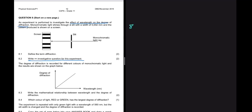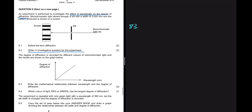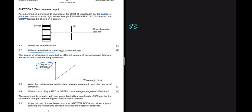Question 8.3 asks for the mathematical relationship between wavelength and degree of diffraction based on the graph. We can see clearly that the degree of diffraction is directly proportional to the wavelength. As the wavelength increases, the degree of diffraction also increases.